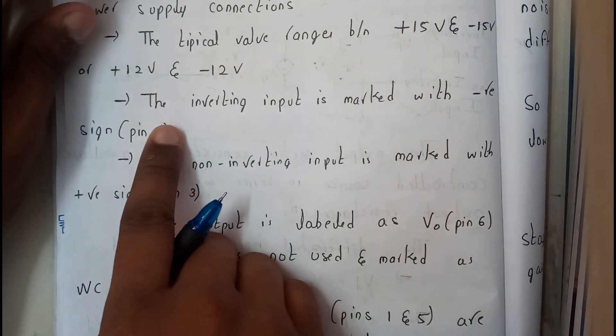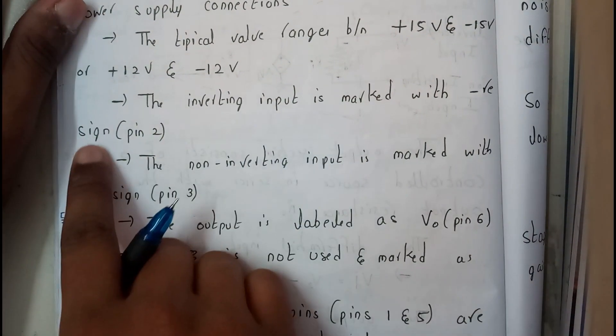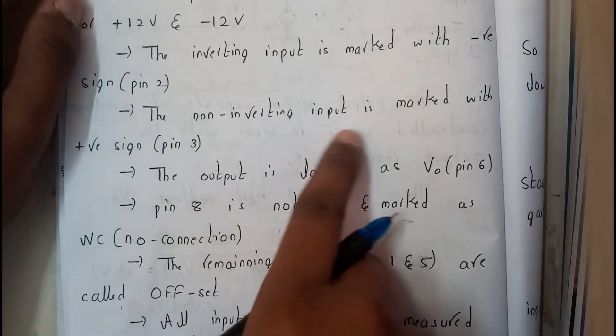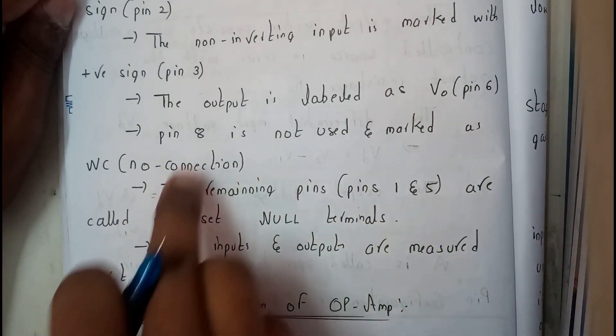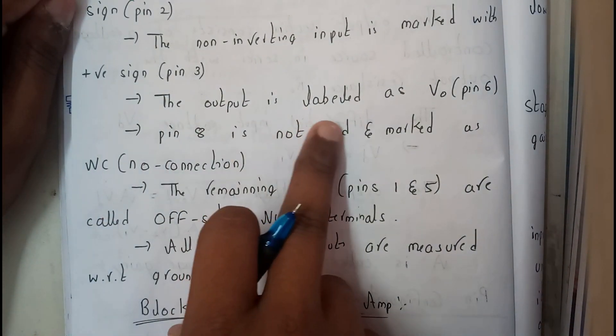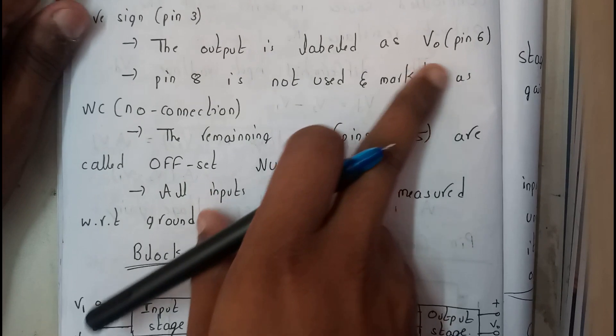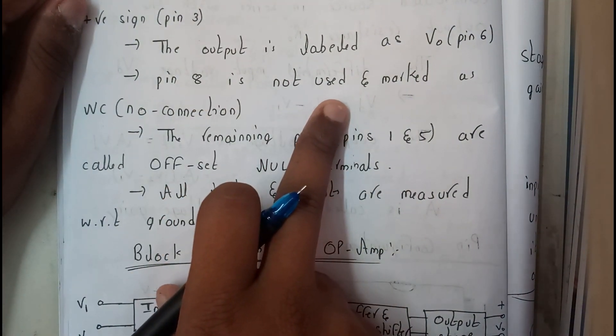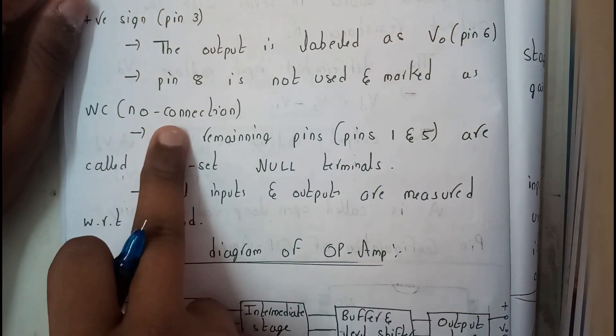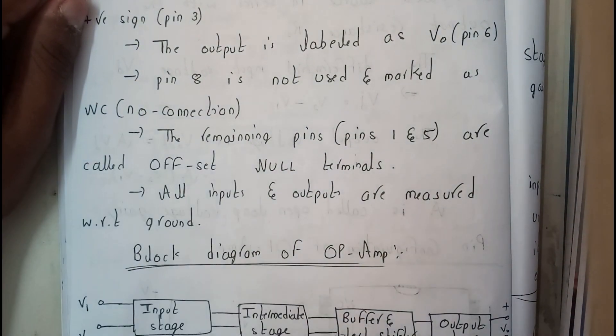The inverting pin is marked as negative sign and the pin number is two. The non-inverting pin is marked with positive and the pin number is three. The output is labeled as V naught, that is pin number six. Pin eight is not used and marked as NC, no connection.